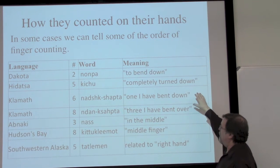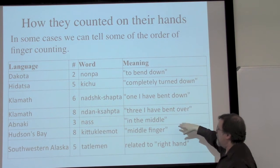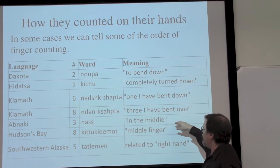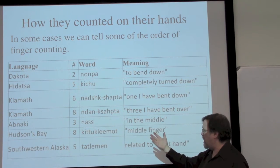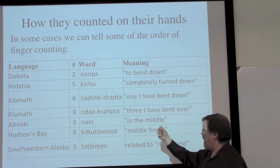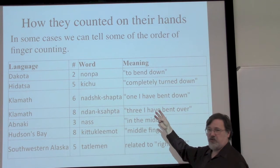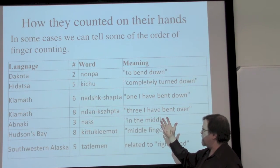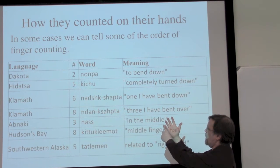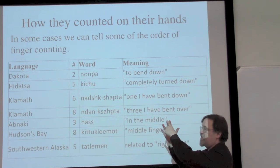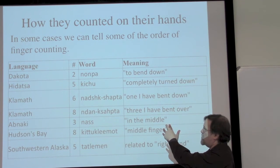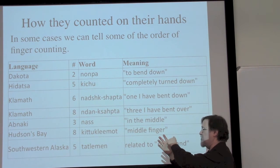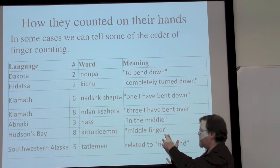The two principal ways of counting on the hands are either starting with a fist and counting up, or starting with an open hand and bending things down as you go. In the Klamath language, we're bending things down. Three is 'in the middle' — which is interesting. If I'm counting from the thumb or the little finger going one, two, three, that middle finger is exactly in the middle. So that's almost certainly how they're counting, starting from either the little finger or the thumb.